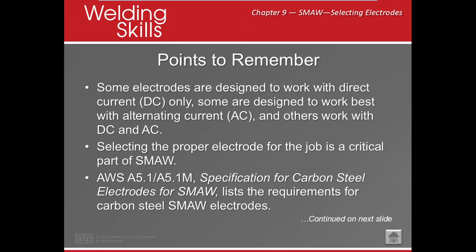Some electrodes work exclusively with DC electrode positive, electrode negative, or AC. Alternating current is not really allowed for structural material — anything three-sixteenths of an inch and larger is structural; three-sixteenths and smaller is sheet material. Always select the proper electrode by following the three rules: match base metal, match or exceed tensile strength, and consider material thickness.